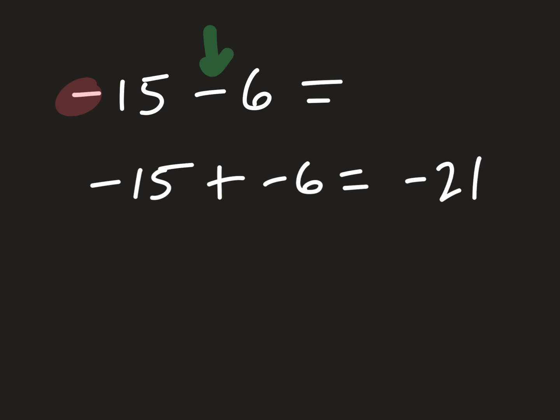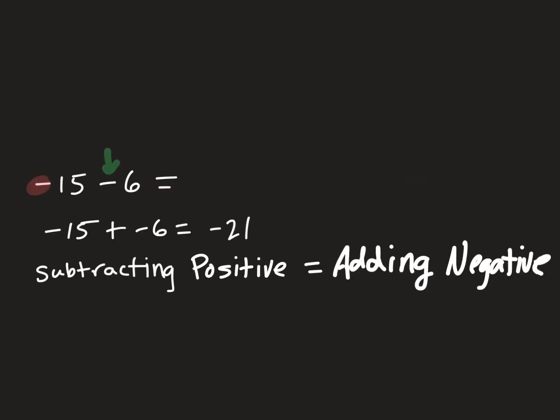So the big idea for these examples is that subtracting a positive is exactly the same thing as adding a negative. Because either way you think about it, you're still going down. You're still getting more negative.